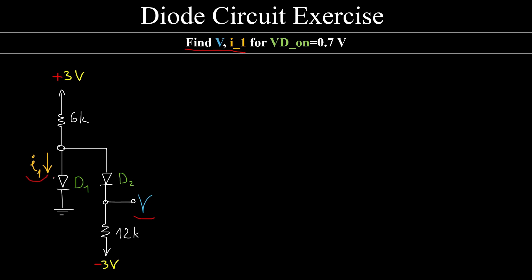Find the voltage and the current in this circuit that contains two diodes. First, we must assume that both of the diodes are on.